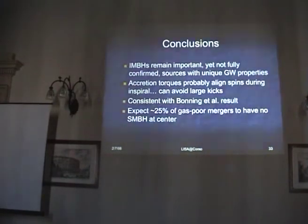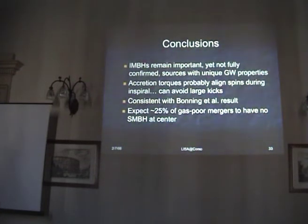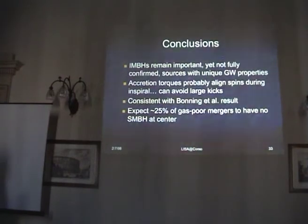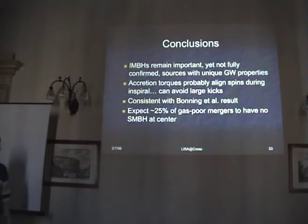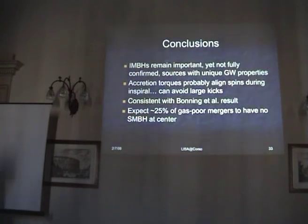The conclusion for the full talk: the intermediate mass black holes I described at the beginning are important sources. They are in a good mass range for many purposes, but they're not fully confirmed to exist. If they do exist, then as gravitational wave sources they have a lot to tell us. For the later portion: accretion torques do lead to aligned spins, reducing kicks. This is consistent with various results, and it would be interesting to see whether gas-poor mergers really do have no black holes in the end. Thank you.